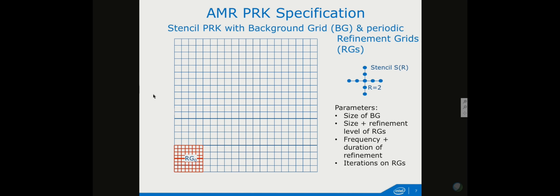You can choose how much of the background grid the refinement covers, the level of refinement within that grid, the time period within which a refinement occurs, how long a refinement stays in existence, and how many times to apply the explicit stencil on the refinement per background grid time step. There are a number of knobs to change the severity — in terms of locality, temporal behavior, and frequency of disturbances on your grid.